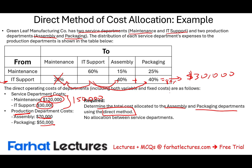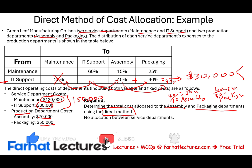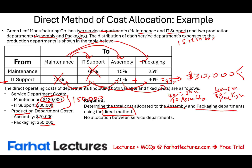We find the relative value of assembly and packaging: 40 divided by 80 equals 50% for assembly, and 40 divided by 80 equals 50% for packaging. Now for the maintenance department: it allocates 60% to IT support, 15% to assembly, and 25% to packaging. Under the direct method, we ignore the 60% to IT support, leaving 15% and 25%, which totals 40%.